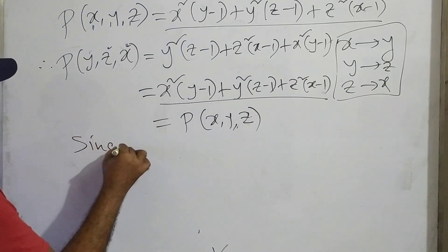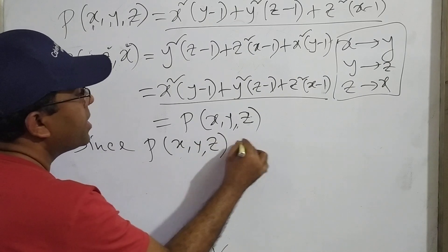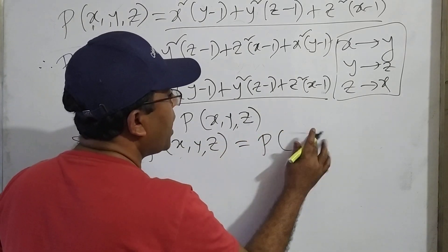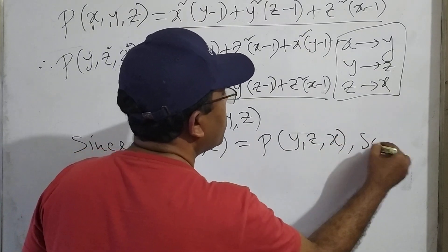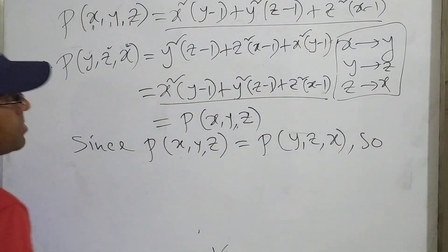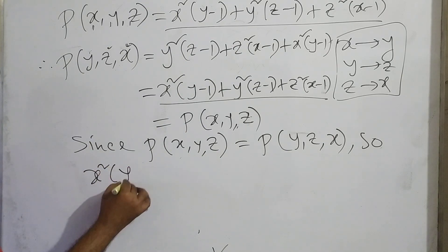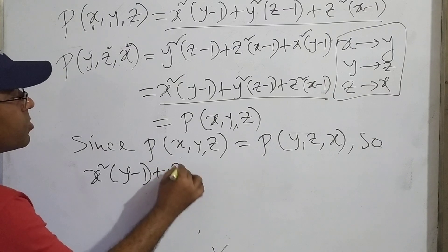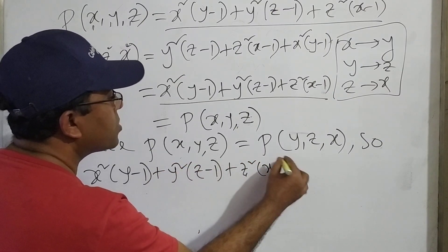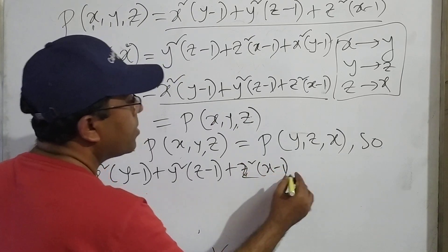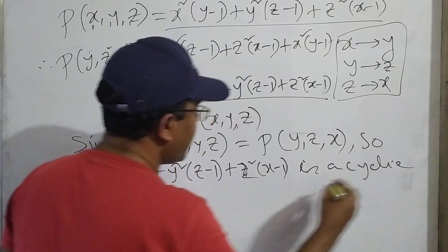Since P of x, y, z equals P of y, z, x, this is a cyclic expression. Therefore x squared (y minus 1) plus y squared (z minus 1) plus z squared (x minus 1) is a cyclic expression.